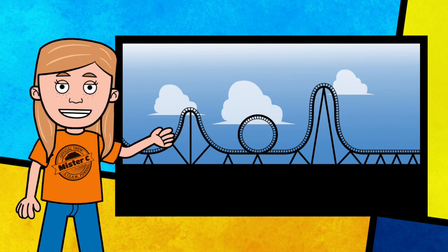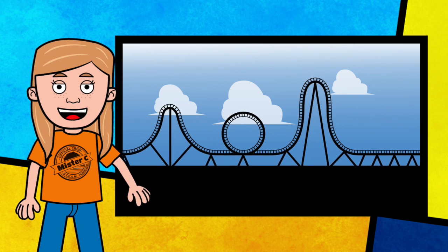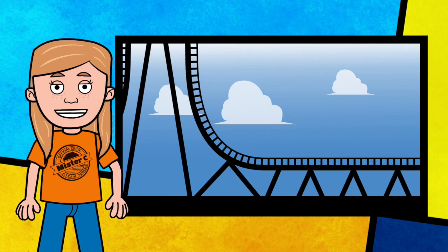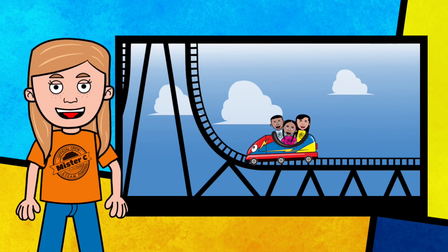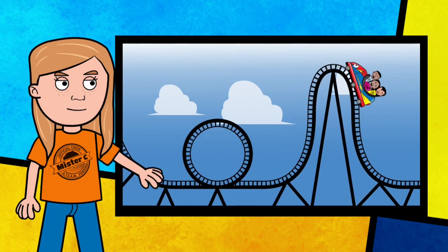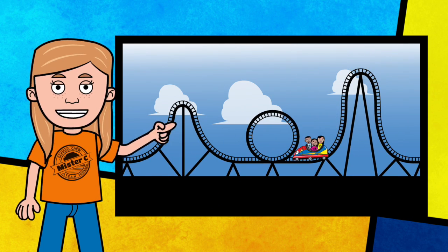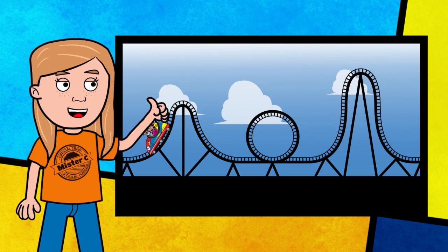The first roller coaster opened on June 16, 1884 in Brooklyn, New York. Roller coasters are able to race on their tracks because of potential energy. If you've ever ridden on a roller coaster, you know that the first hill is the tallest and honestly, the best. In order for the cart to make it over the second hill, the first hill must be taller. Yippee!